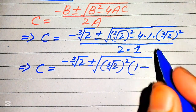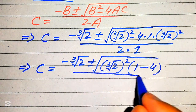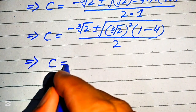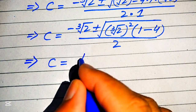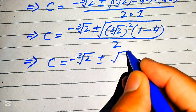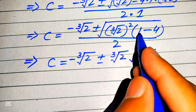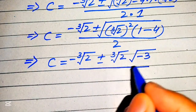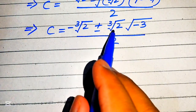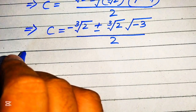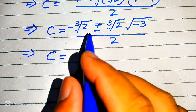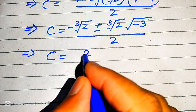This simplifies to c equals negative cube root of 2 plus or minus square root of (cube root of 2) squared times (1 minus 4). Since 1 minus 4 equals negative 3, we get cube root of 2 times square root of negative 3, divided by 2. We then factor cube root of 2 as a common term in the numerator.